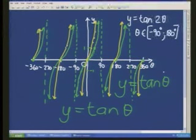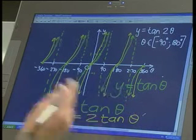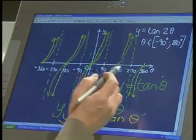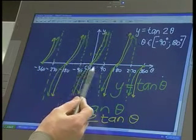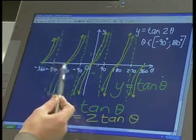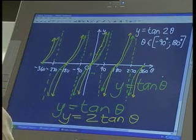That which I've drawn in yellow is the graph of y equals 2 tan theta, where the 2 is in front. What is the period of this graph? It's still 180, because the graph repeats itself after every 180 degrees. So the period of the graph is 180 degrees.